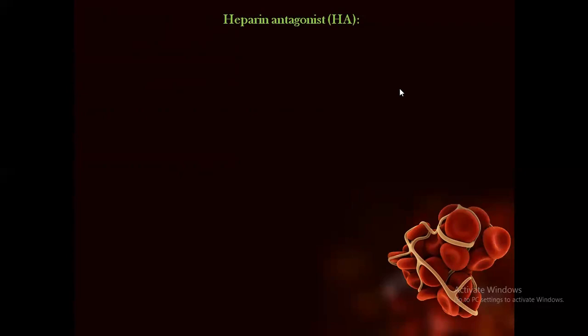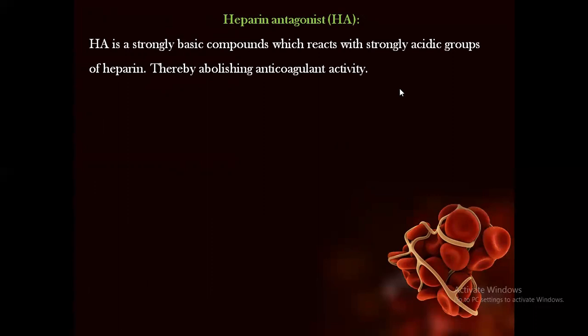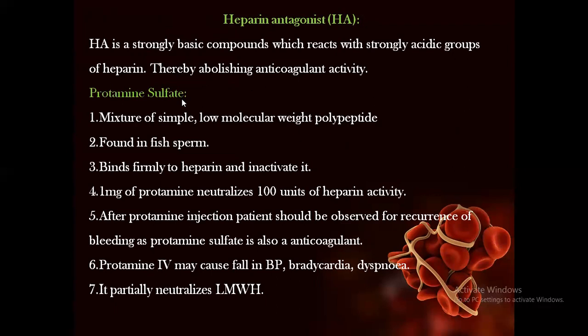Heparin antagonist: in case of emergency, a heparin antagonist can prove helpful. These are strongly basic compounds that abolish the anticoagulant activity of heparin. The example is protamine sulfate — a mixture of simple low molecular weight polypeptides found in fish sperm. It binds firmly to heparin and inactivates it; 1 mg of protamine neutralizes 100 units of heparin activity. After protamine injection, the patient should be observed for recurrence of bleeding as protamine sulfate is itself an anticoagulant. It can partially neutralize low molecular weight heparin and causes fall in BP, bradycardia, and dyspnea.